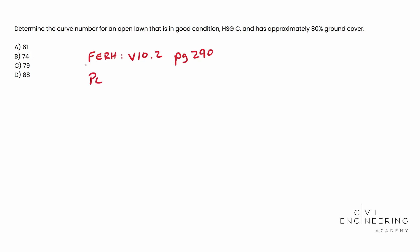For the PE reference handbook, we're looking at version 1.2 — make sure you've got that one pulled. That's going to be page 387, which covers flow calculations, or page 390 where you'll find the table. Again, this is a super easy problem — one you should knock out very quickly.